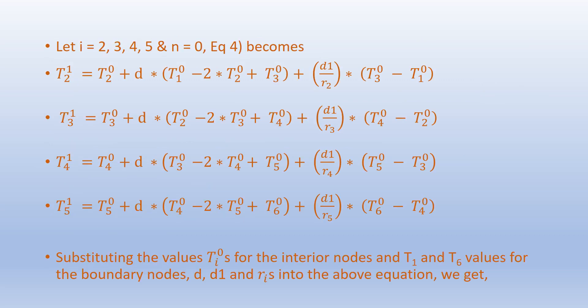For i = 2, 3, 4, 5 and n = 0, equation 4 becomes: T2^1 = T2^0 + D·(T1^0 - 2·T2^0 + T3^0) + (D1/r2)·(T3^0 - T1^0), and so on for the other interior nodes.